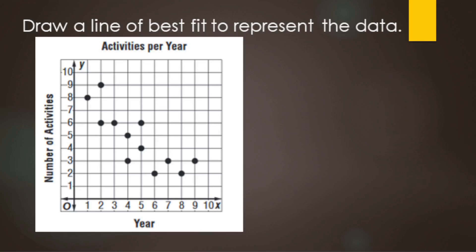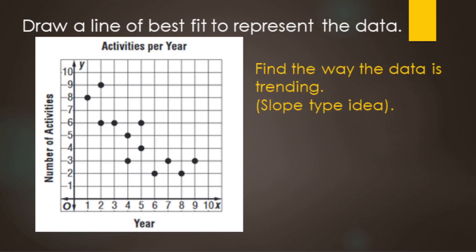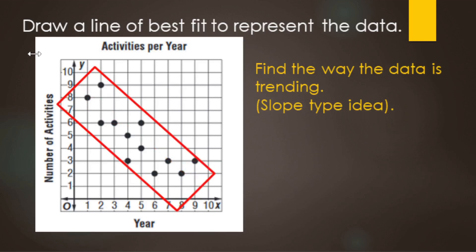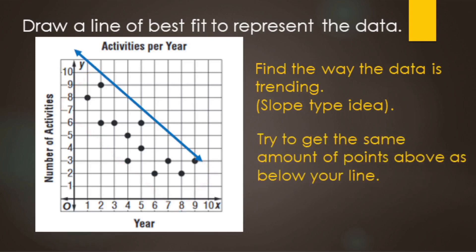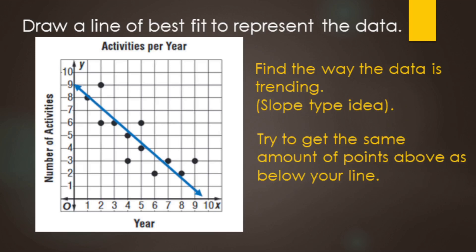Now we're going to draw a fitted line or line of best fit. This scatter plot shows number of activities versus number of years. You want to figure out which way the data is trending — that's a slope-type idea. Once you have the slope direction, slide the line up or down until you have about the same number of data points above the line as below it. This is going to be a good trend line or line of best fit.